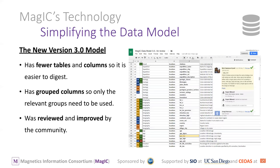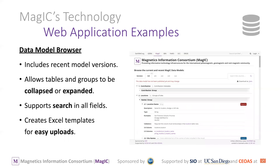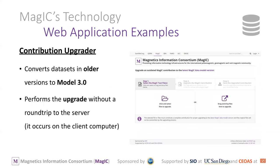The new data model is version 3.0. It has nine tables — a lot fewer than before — so it's a lot easier to digest. It has grouped columns so one can hide things one doesn't want to use. Some of you in this room reviewed and improved it when we first put out a beta test — thank you for that input. There is a web application data model browser where one can upload in an Excel-like sheet online, and a contribution upgrader that converts data sets in older versions to model 3.0.